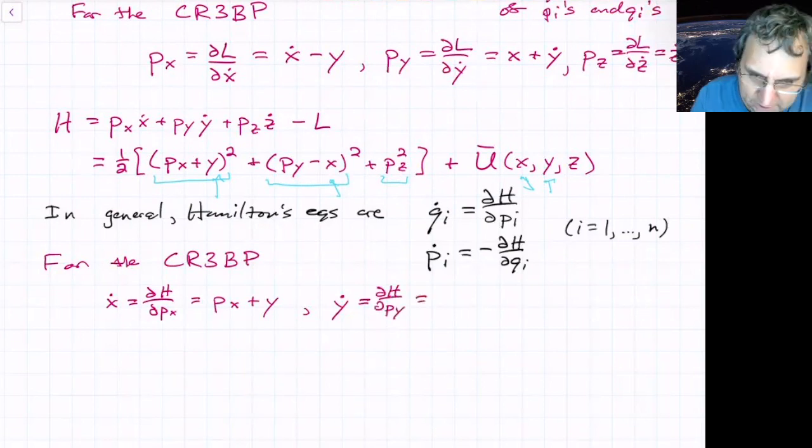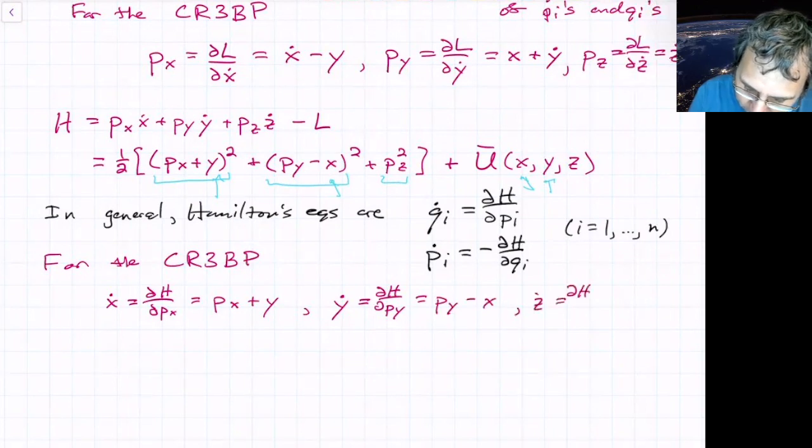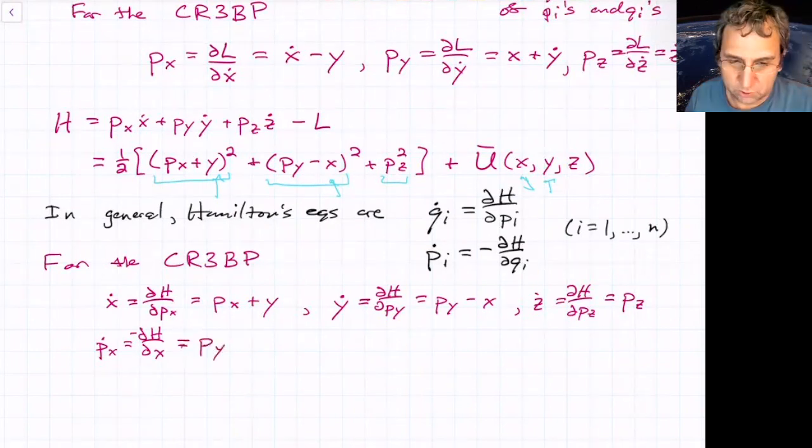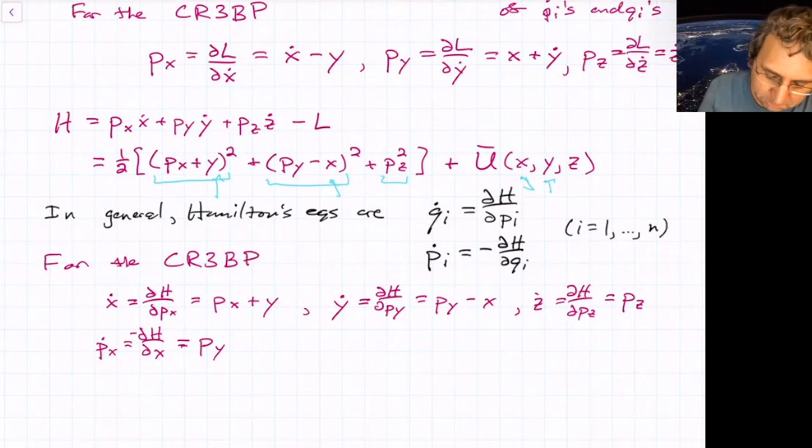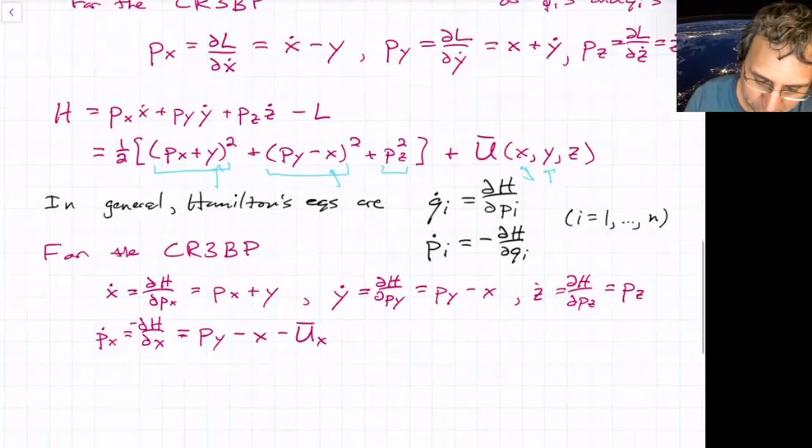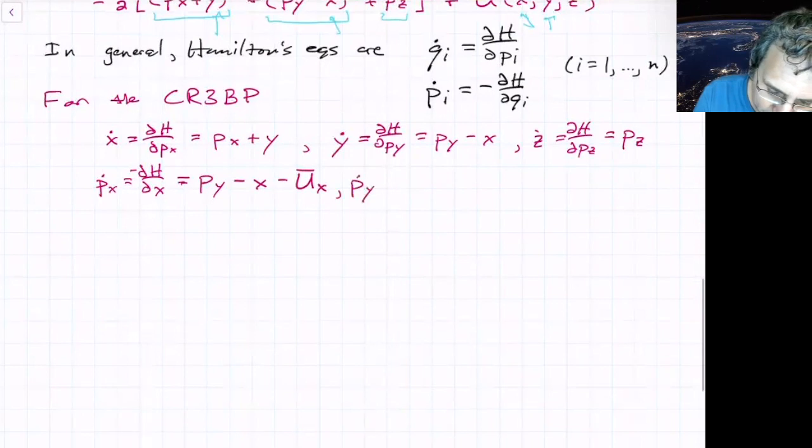So that's x dot. Y dot is partial h, partial py, and that is py minus x. Z dot is partial h, partial pz, and it is just pz. What about px dot? px dot is negative partial h, partial x, and if you work out what that is, this is, strangely, we have a momentum showing up. So this is py minus x minus the effect of potential, partial the effect of potential with respect to x. So I'm just writing that in shorthand form as subscript x.